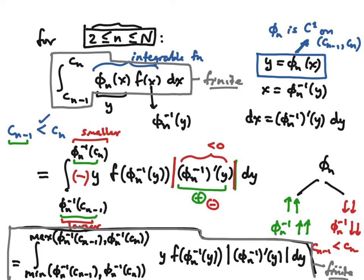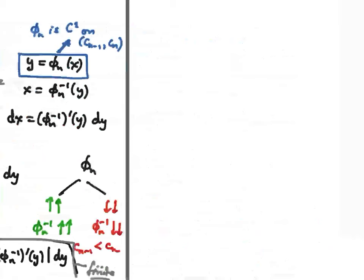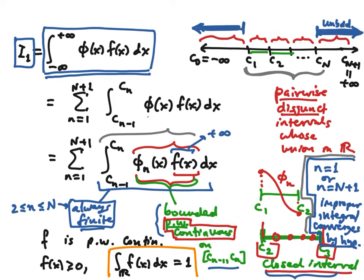We would also like to see that the exact same change of variables works when little n equals one or capital N plus one — the two special cases where we have an improper integral, which we know is convergent. Because it is improper, we have to make sure the change of variables actually works. When we make a u-substitution, we're only used to doing it in regular calculus where the integrals are not improper.